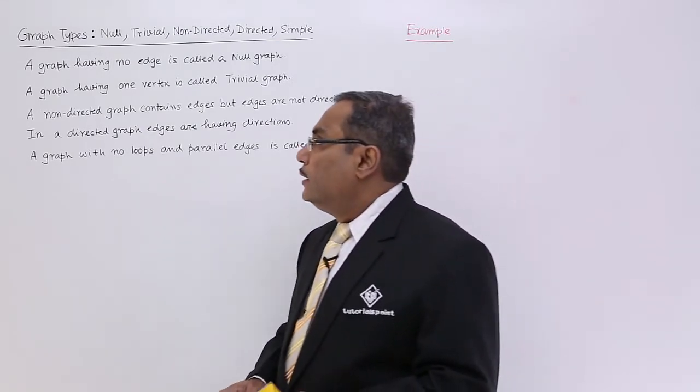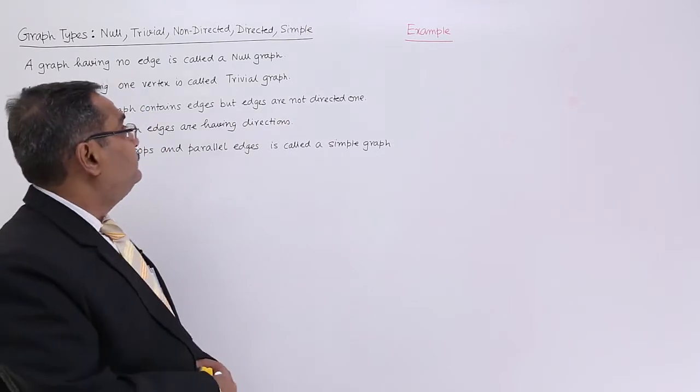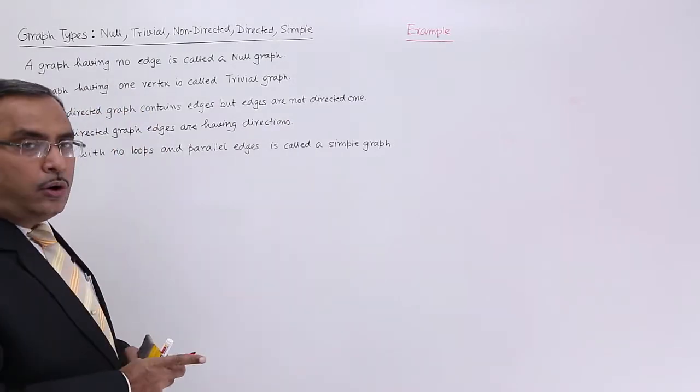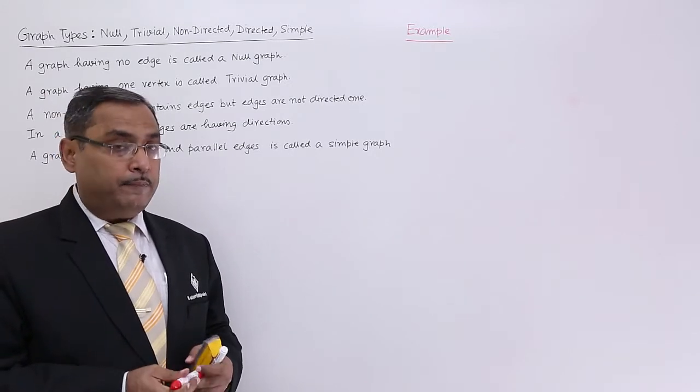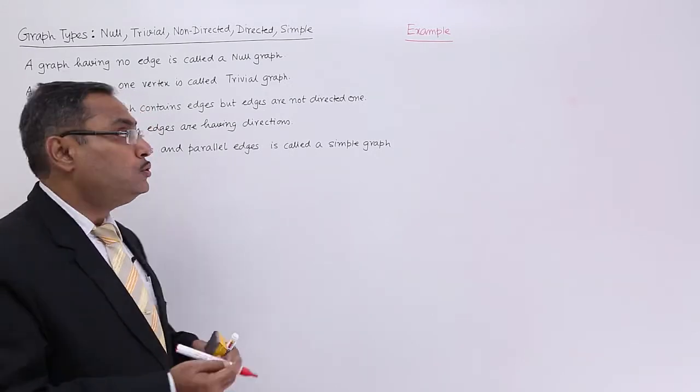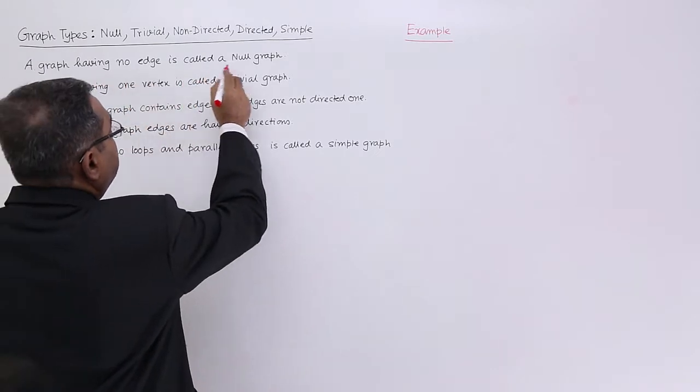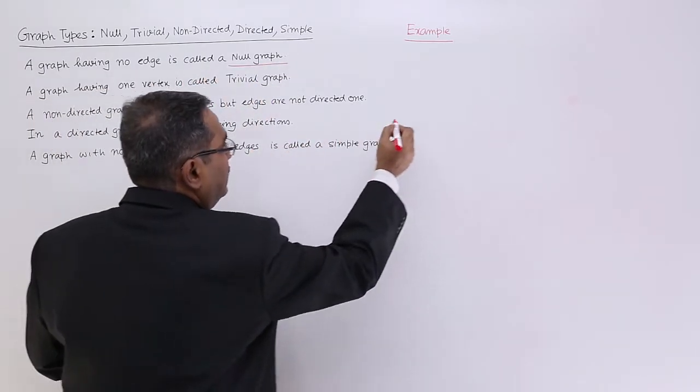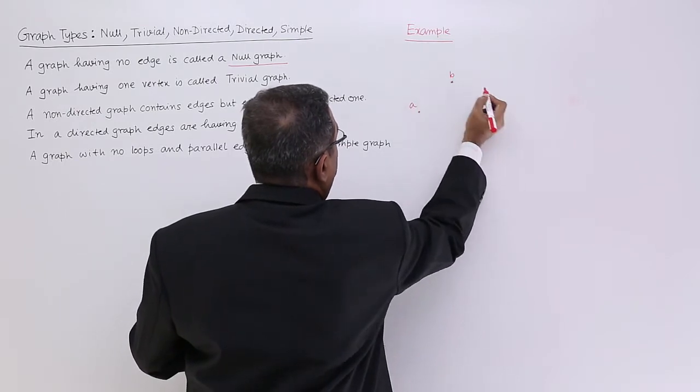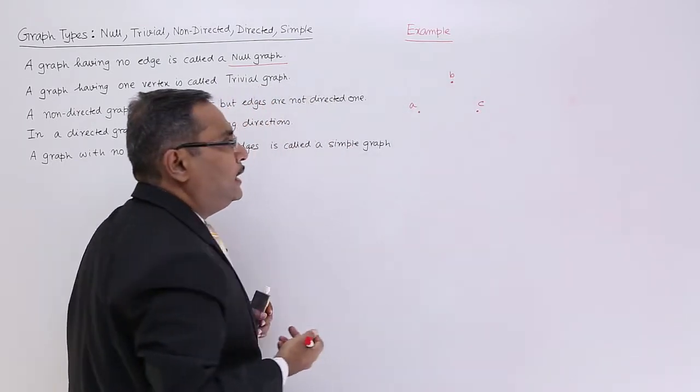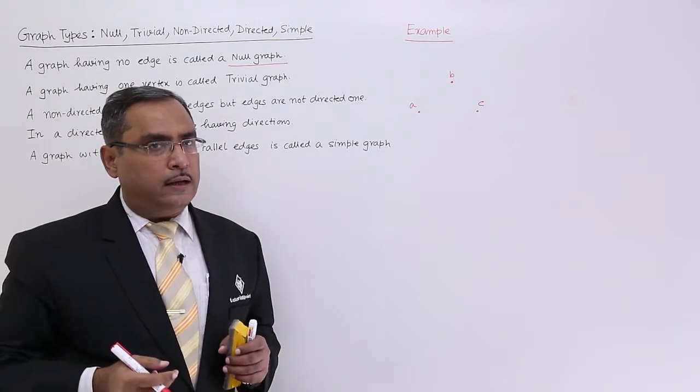What is a null graph? A graph having no edge is called a null graph. The graph will not have any edge, but might have some nodes. For example, if I draw a graph with three nodes but no edges, that is a good example of a null graph.